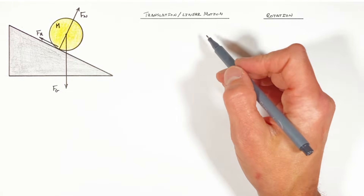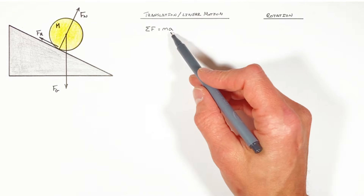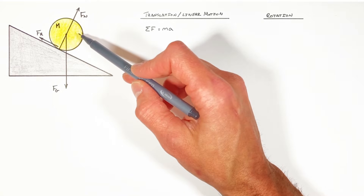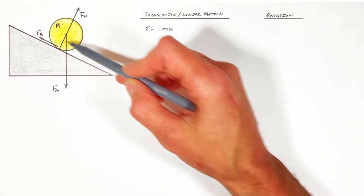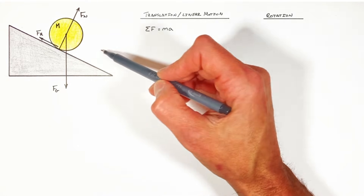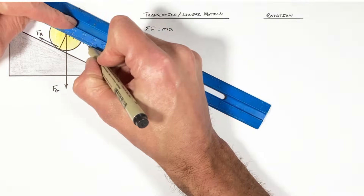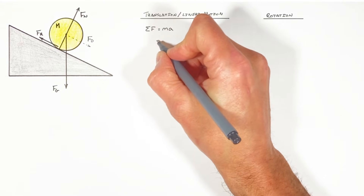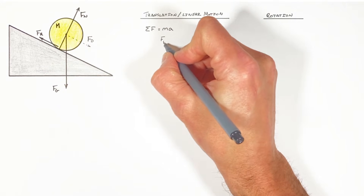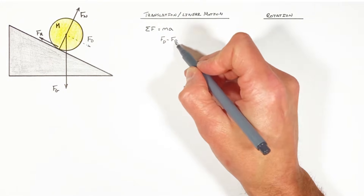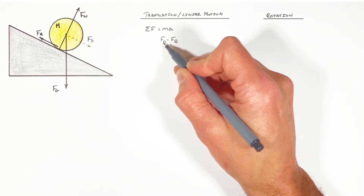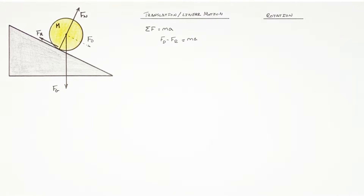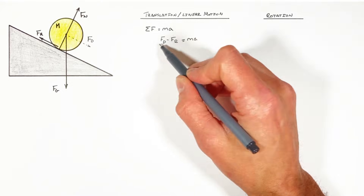Looking at this situation first through a translational lens, we take a look at Newton's second law: the sum of all forces equals ma. Within the plane of this hill there are two forces acting on this rolling object — we've got friction up the hill, and gravity also has a component parallel to the hill, which I'll call the force down the hill. So the sum of all forces is the force down the hill minus the friction force — friction is negative because it's in the opposite direction — and we set that equal to ma. Both of these forces can be expanded.